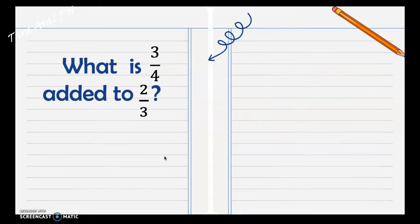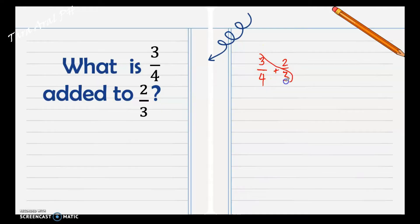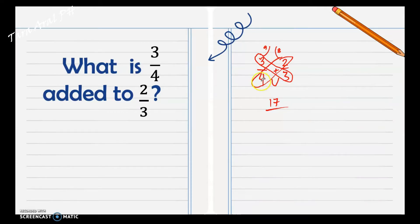Next, what is three fourths added to two thirds? They are dissimilar fractions, so we use the butterfly method: three fourths plus two thirds. Cross multiply: three times three is nine, and two times four is eight. Then add the two numbers: nine plus eight equals seventeen. Multiply the denominators: four times three equals twelve.